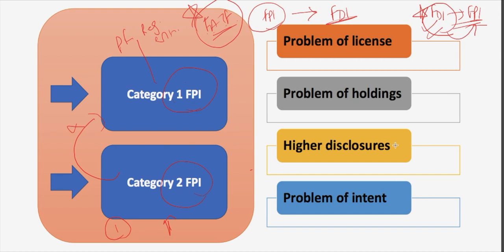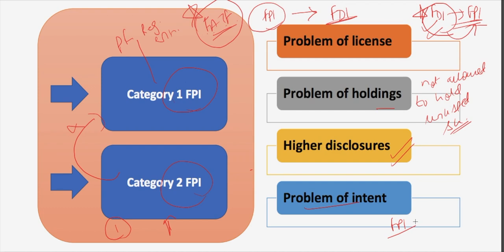The first problem is licensing — SEBI's reclassification will require affected overseas funds and private equity companies that already made FDI investments to obtain a compulsorily secured FPI license. FPIs are also subject to higher disclosures. Then there is the problem of holdings — under the FPI regime an entity is not allowed to hold unlisted shares, while a large portion of FDI investments are in the unlisted space. Finally, the problem of intent: FDI investments are strategic and long-term and can be in listed and unlisted assets, whereas FPI portfolio investments are short-term, with investors having liberty to buy or sell on stock exchanges and FPI cannot invest in unlisted shares.